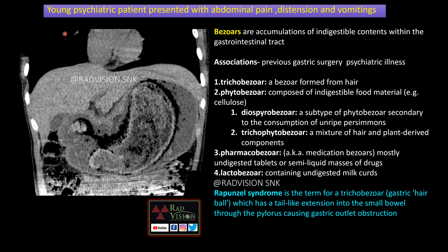Next case: a young psychiatric patient presented with abdominal pain, distension, and vomiting. You can see there is a mixed density lesion noted within the stomach with multiple air foci scattered and trapped within and adjacent to the lesion, along with gastric dilatation. The lesion is also seen partly extending into the pyloric antrum. Whenever you see this typical imaging feature, definitely suspect a bezoar.